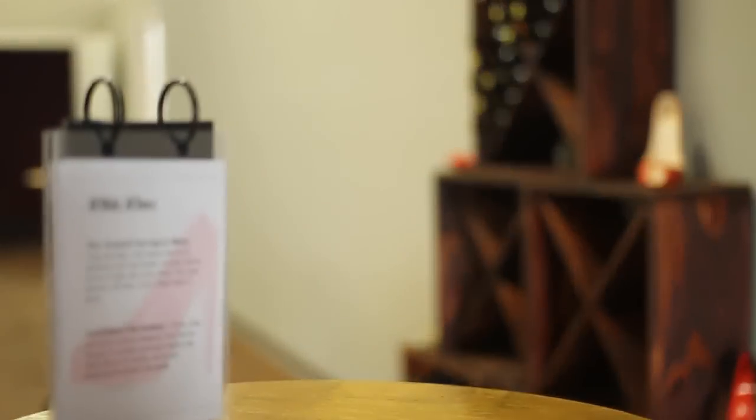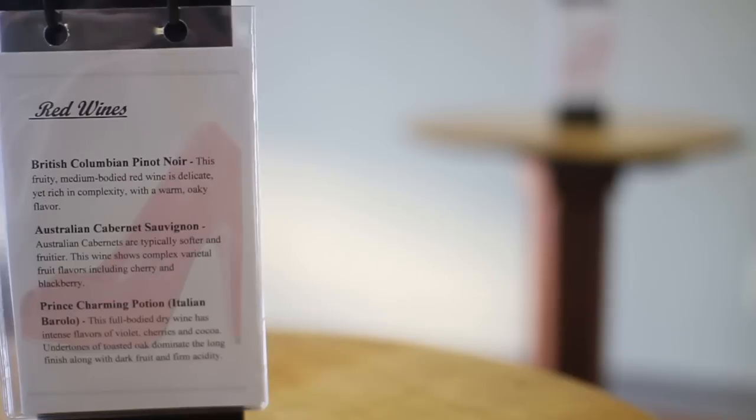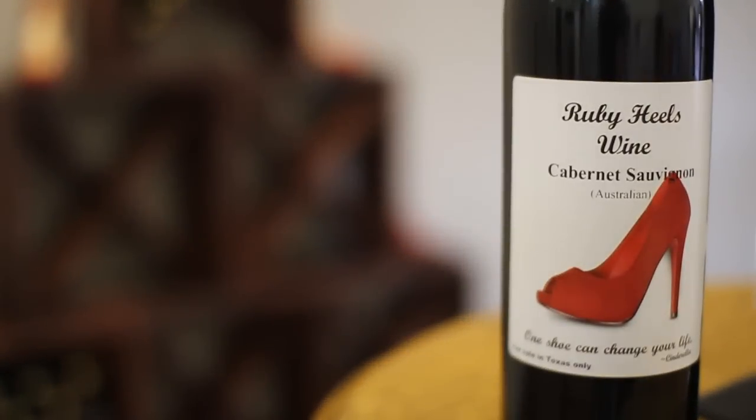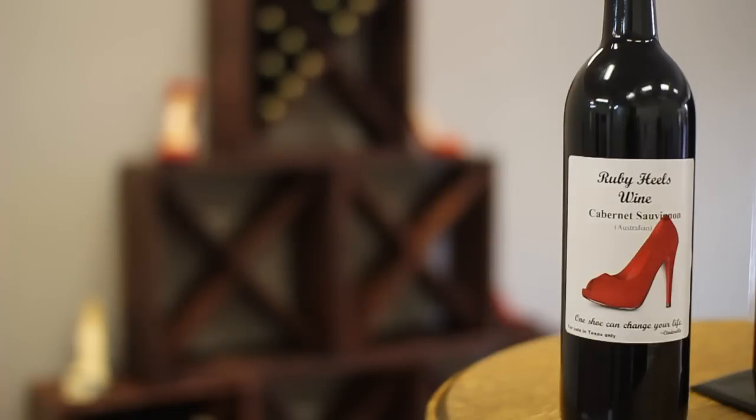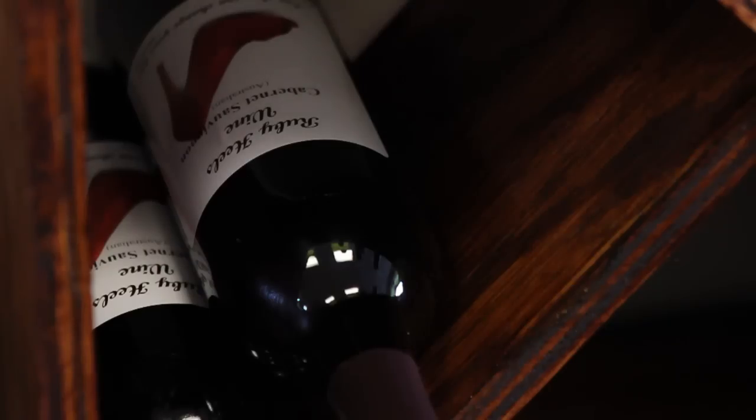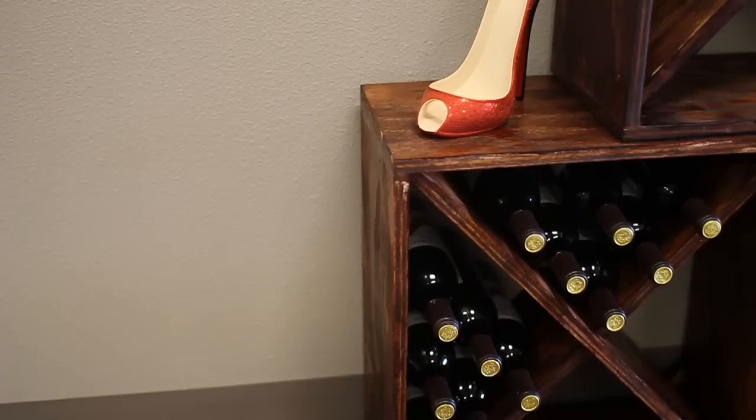Well, we're actually going to be starting out with two whites, a Chardonnay and Sauvignon Blanc. So I have four red wines on the menu to start with, a Brunello, a Barolo, a Cabernet Sauvignon, and a Pinot Noir. And that way we can go from the really dry and heavily oaky one to a fairly mild and not quite as dry red wines.